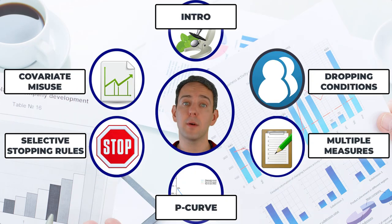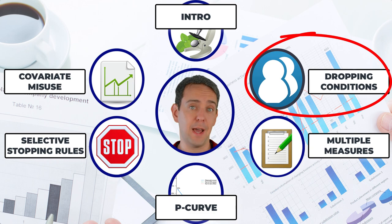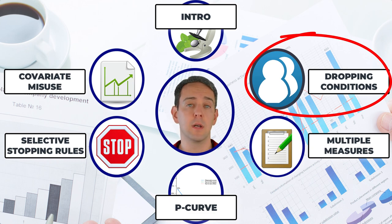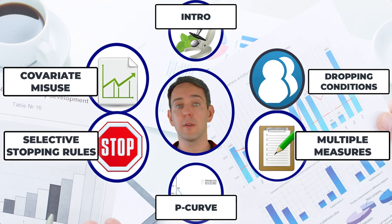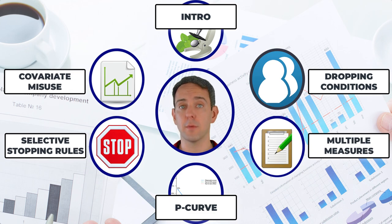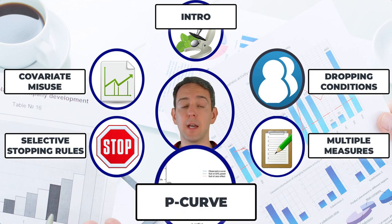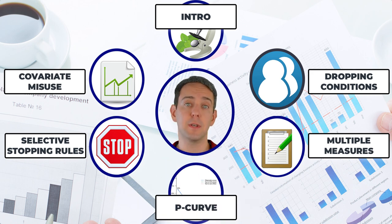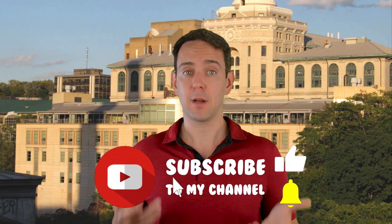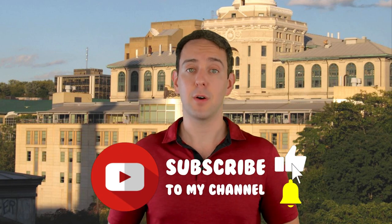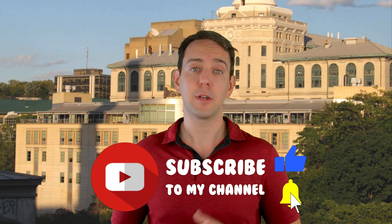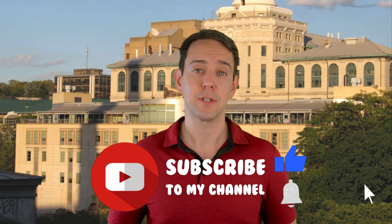I hope you now understand a bit better this one form of p-hacking: dropping conditions that don't work. In the other videos in this series, I'll cover three other forms of p-hacking, as well as a tool that can be used to detect p-hacking in published work. And if there's a form of p-hacking you want to share with me that I'm not covering, please leave a comment below, and I'll make sure to keep the conversation going.